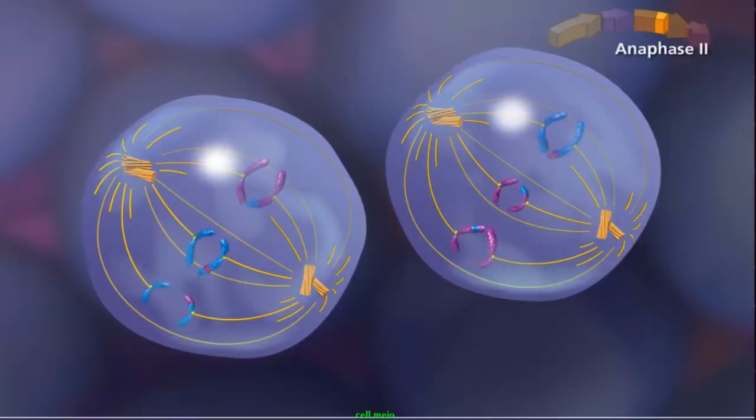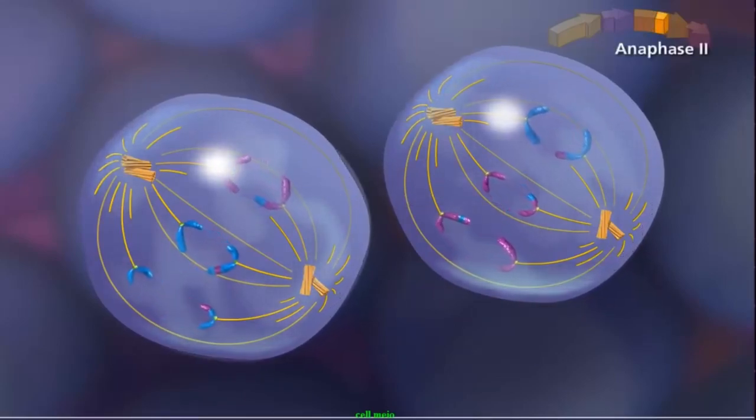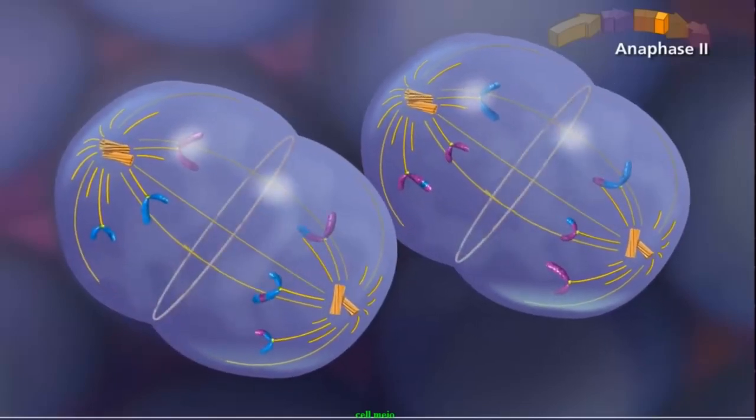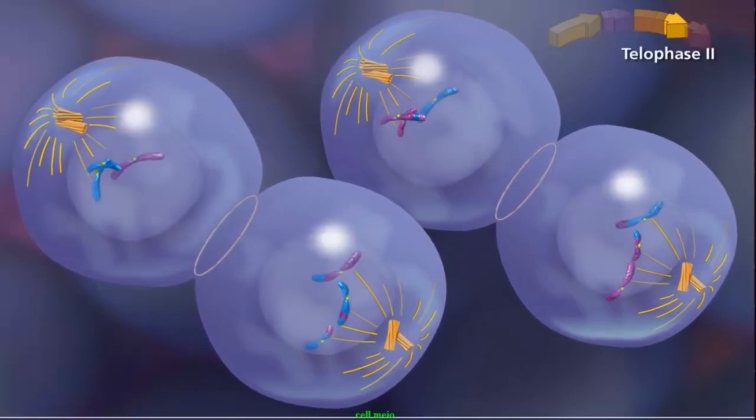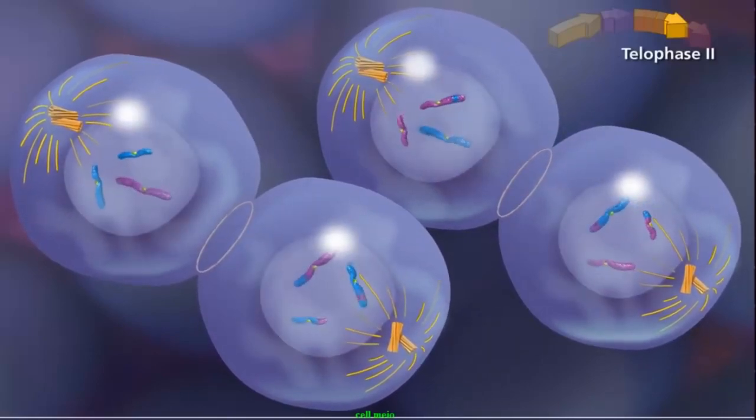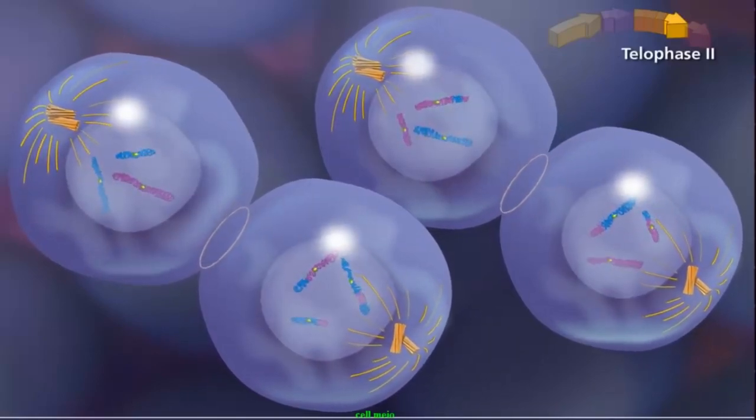During anaphase II, sister chromatids separate and individual chromosomes move toward the poles. The entire process ends with telophase II, as the chromosomes decondense and the nuclear envelope reforms.